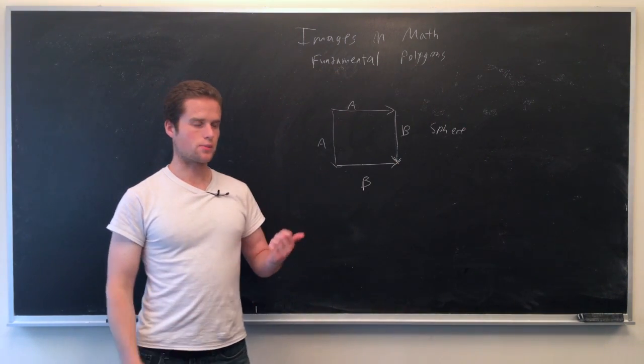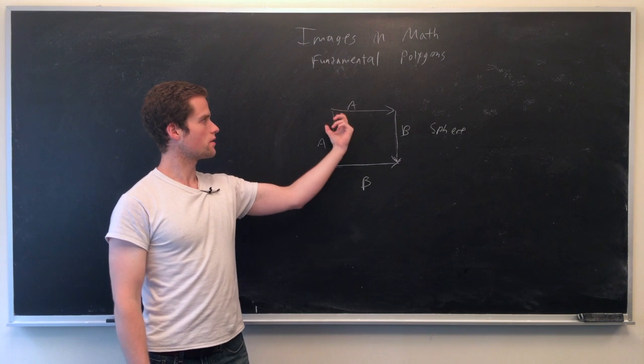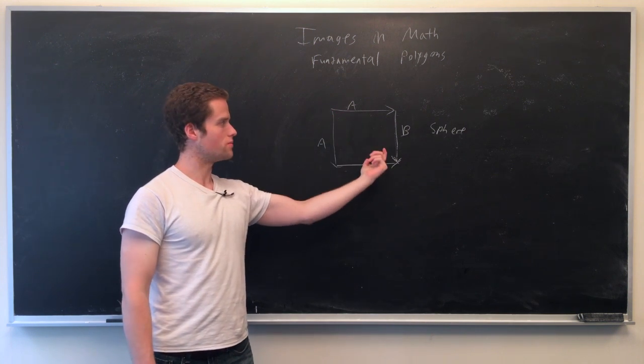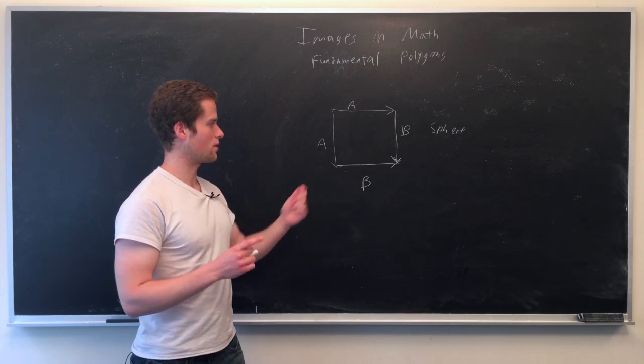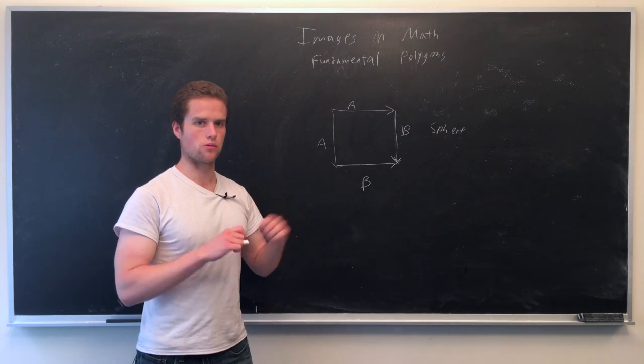So now we're going to identify some other sides. The two A sides will be identified together, the two B sides will be identified together. The arrows tell us what the orientation of the sides will be identified with, so the end of the arrows will go together.